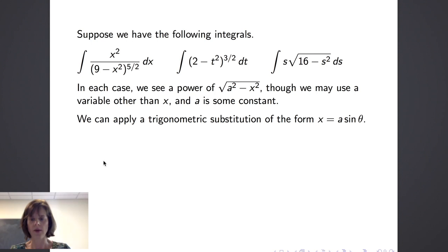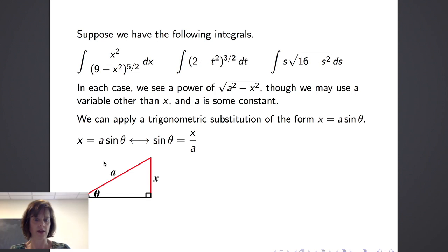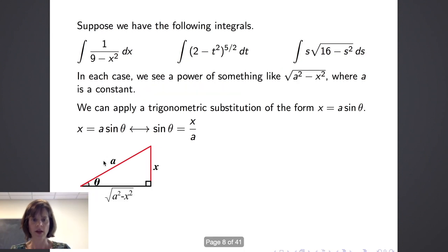So where does this substitution come from? x equals a times the sine of theta means that the sine of theta equals x over a. If we remember a right triangle, the sine of an angle is the opposite over the hypotenuse. Drawing the reference triangle for sine of theta equals x over a, we get a right triangle where x is the side opposite the angle theta, and a is along the hypotenuse. We can use the Pythagorean theorem to solve for the length of the third side, which is the square root of a squared minus x squared.